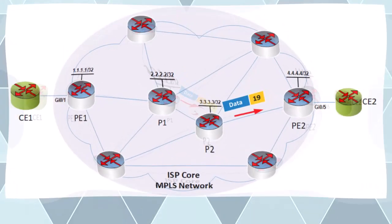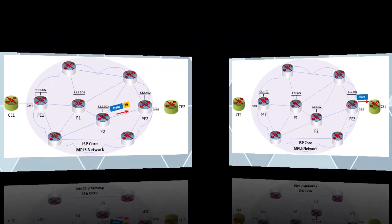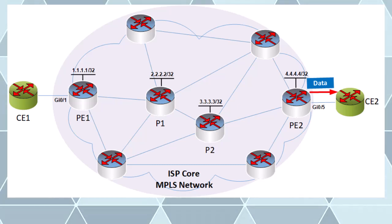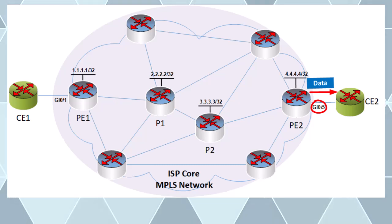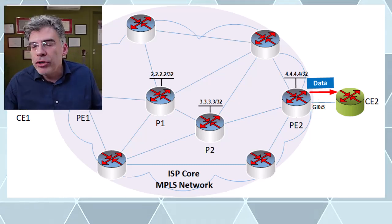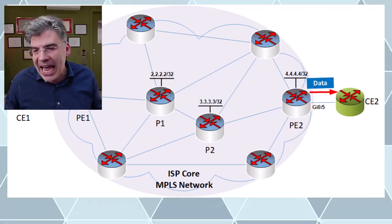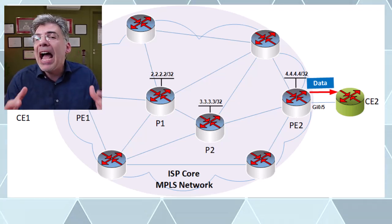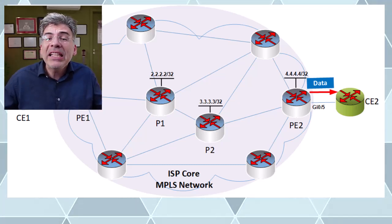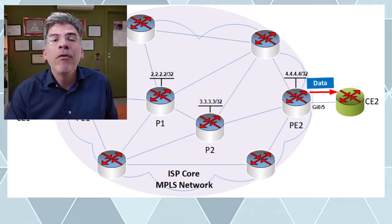P2 sees that it is the last P router in the path so it performs penultimate hop popping and removes the transport label, sending the frame to PE2. PE2 sees the inner label of 19 which corresponds to bridge domain 10, so it pops the inner label and sends it out of its GigabitEthernet 0/5 interface which uses bridge domain 10 — the data has reached its destination. Note that depending on whether you're using Cisco IOS, Cisco IOS XE, or NXOS on Nexus devices, you may have somewhat different command syntax, but the overall concepts remain the same. That gives you an idea of how Layer 2 VPNs are configured using eVPN and MPBGP over an MPLS network.